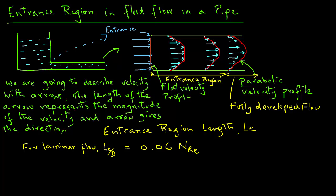However, if we have turbulent conditions, then the expression to determine the entrance region is LE over D equals 4.4 times Reynolds number raised to the power 1 over 6.